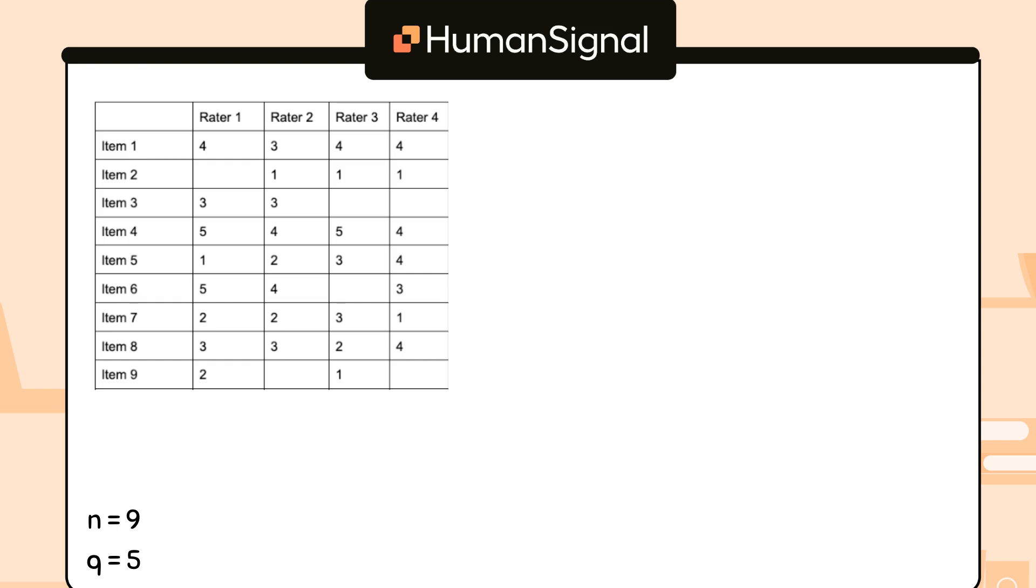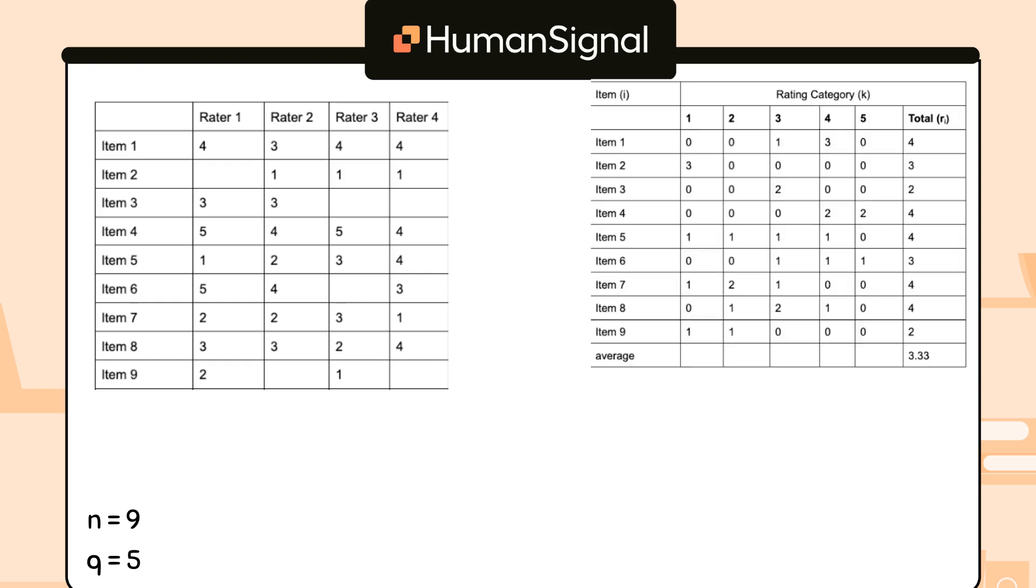Now, we're going to need to calculate how many times each item received a given rating. This will look very similar to the table we made for Fleiss's Kappa last time, except instead of counting yeses and nos, we're counting scores 1 through 5. In the formula that we'll use in a minute, the item number is i, the rating category is k, and each of the values in the table are r sub ik, the number of times raters assigned an item i a score of k. We're also going to calculate the total number of ratings for each category, a simple sum, in the total column. This will be the value of r sub i. Finally, we'll average the total column, which gives us r bar, or the average number of raters who rated each item. The table is shown on the screen.